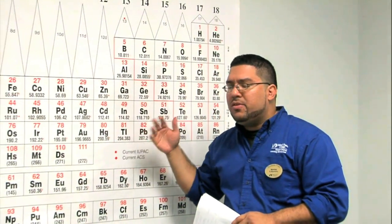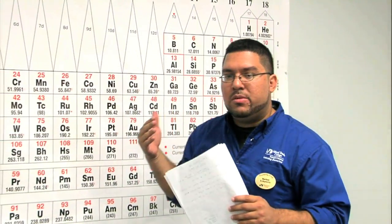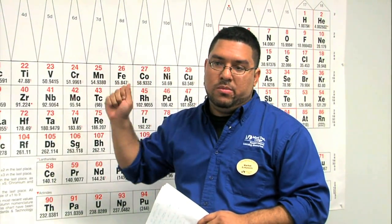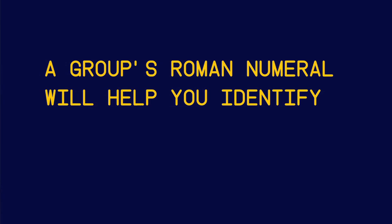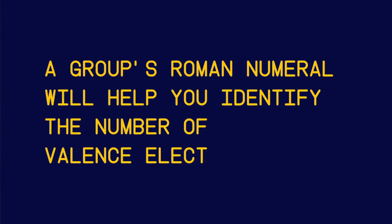So, I think you're starting to see the idea. In order to figure out the number of valence electrons, you simply look at the group number. And that will tell you the number of valence electrons for that element. A group's Roman numeral will help you identify the number of valence electrons.